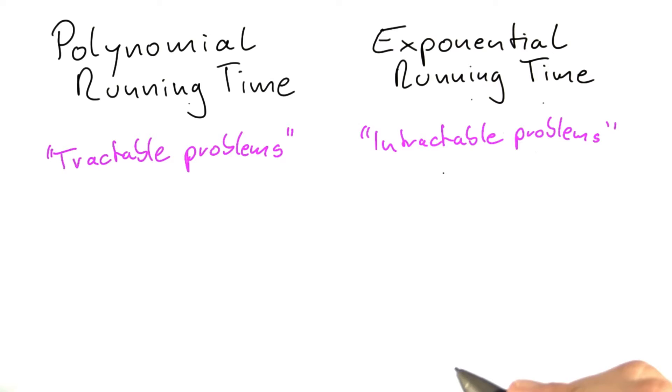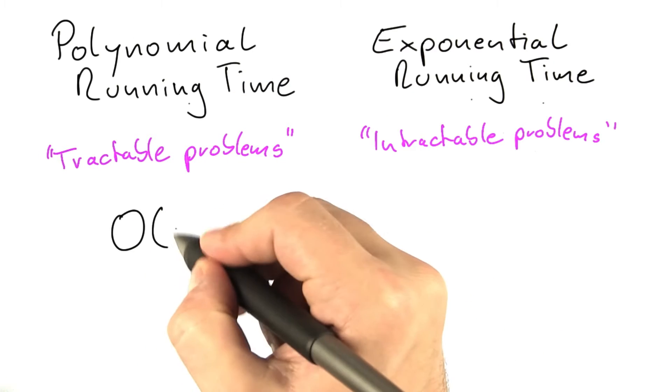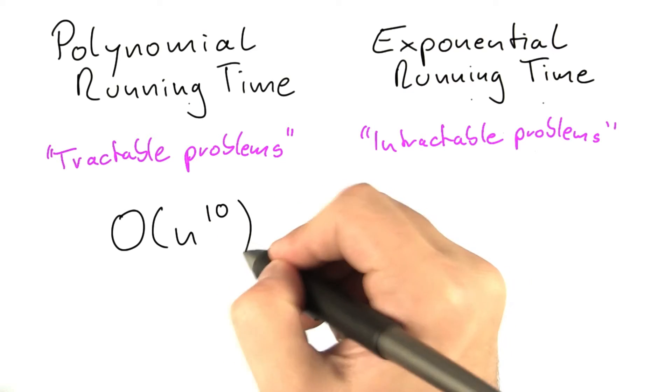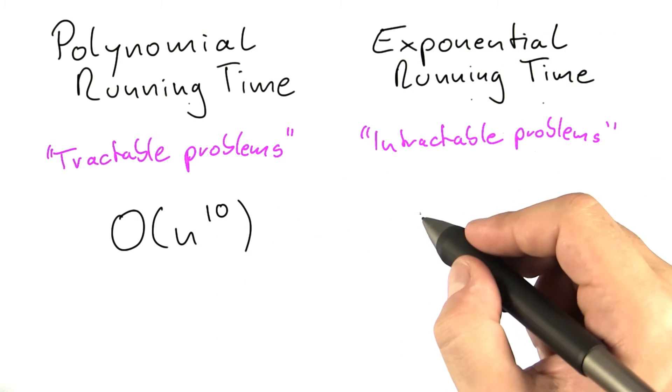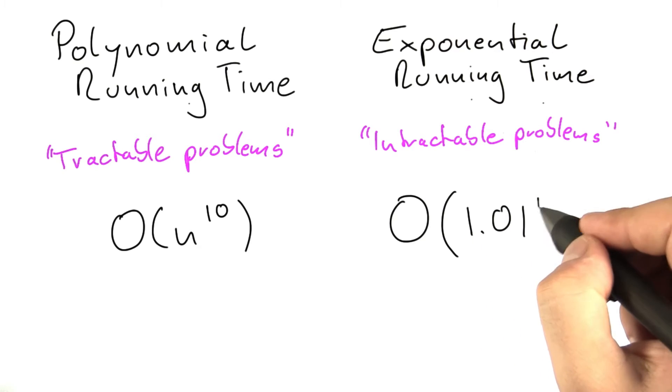For example, if you had an algorithm with polynomial running time O(n^10) and an exponential running time algorithm with running time 1.01^n,